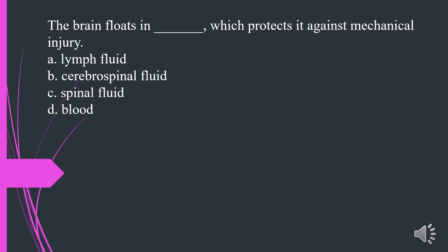The brain floats in what, which protects it against mechanical injury? A. Lymph fluid. B. Cerebrospinal fluid. C. Spinal fluid. D. Blood. The answer is B. Cerebrospinal fluid.